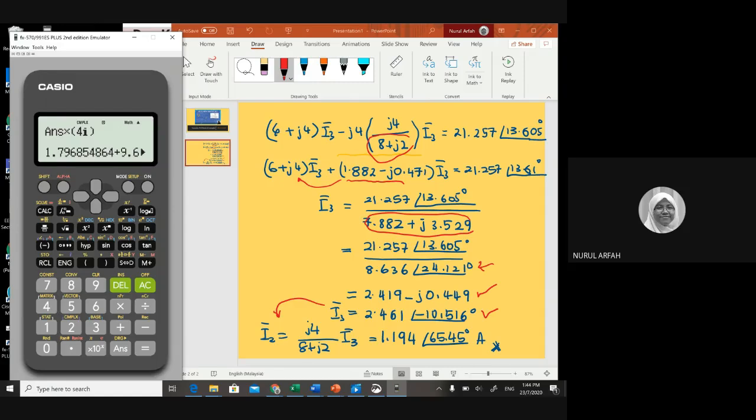So divide by 8 plus 2i, and you get the answer in phasor form. Change it to phasor - you get 1.194 - and view the rest.